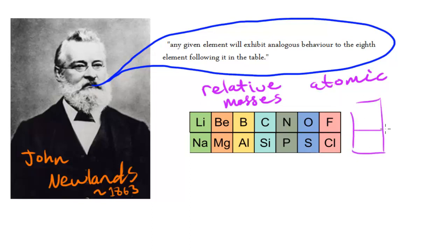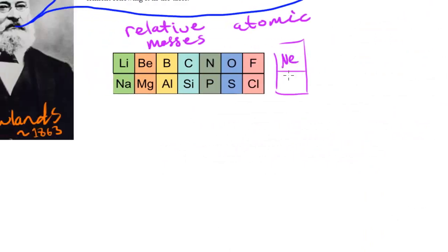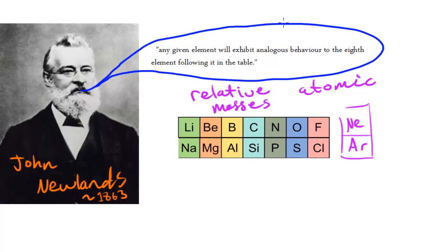You probably notice that there's something missing here. We've got the noble gases which are missing. What would probably be here if we had the noble gases would be neon and argon. But the problem is at this time they did not know that noble gases existed because noble gases are so unreactive it's hard to detect their presence.